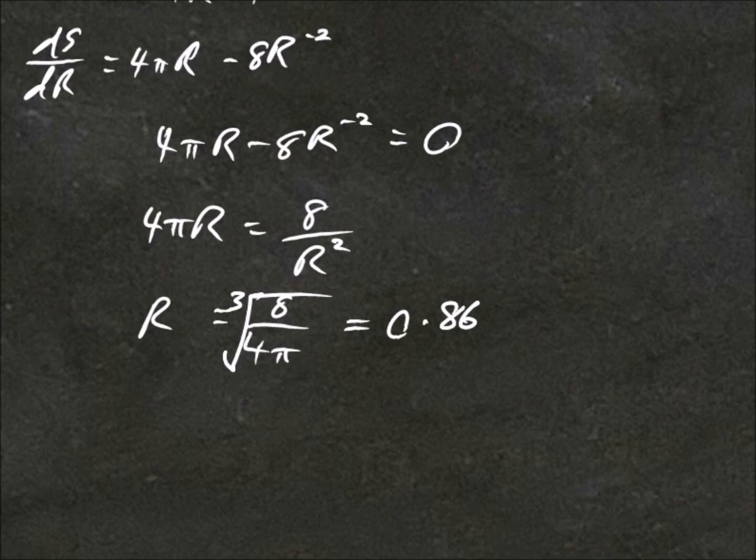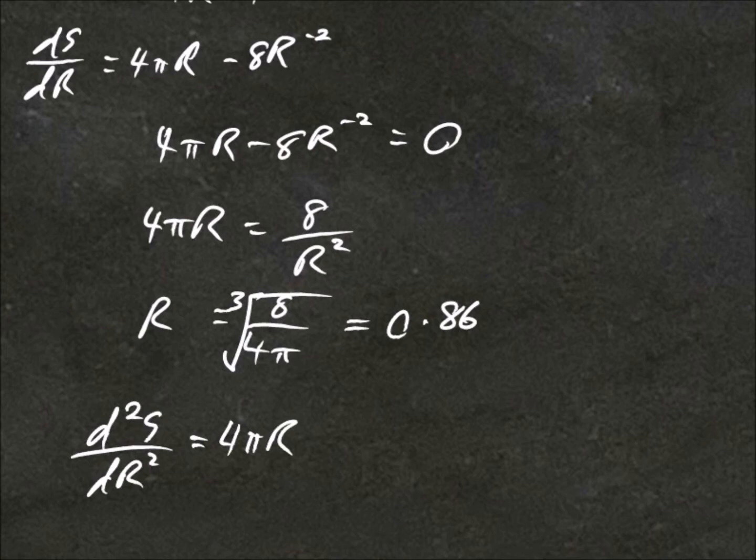So we're not sure if this r is a maxima or minima. So if we take the second derivative, which is d2s over dr squared equals 4 pi r plus 16 r to the negative 3, which we'll write as r cubed. Now because this is greater than 0, that means that this is a minimum.